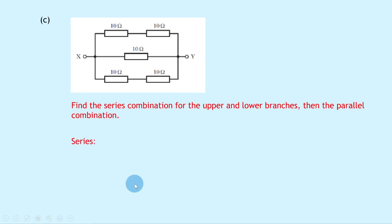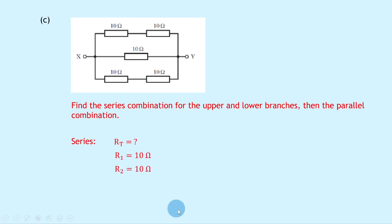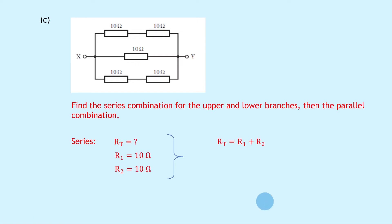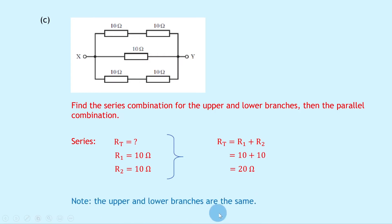Doing the series combination first, we only need to do it once because both the upper and lower branches are identical. R1 is 10 ohms and R2 is 10 ohms. RT equals R1 plus R2, so substituting in gives us 10 plus 10, which gives us 20 ohms. The upper and lower branches are the same, so we don't need to do this again — the lower branch is also 20 ohms.